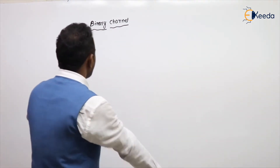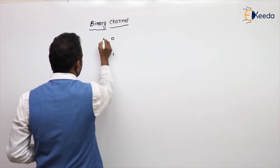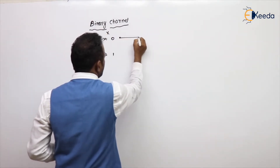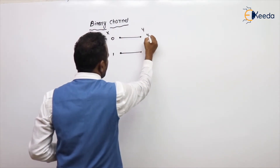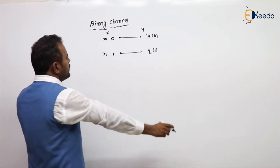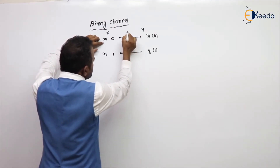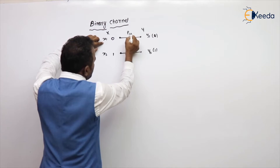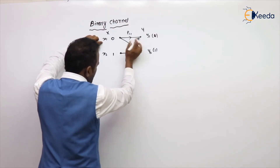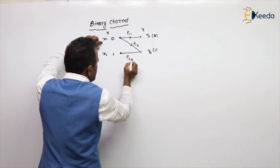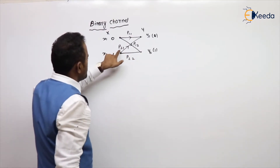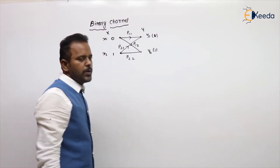For example, consider a binary channel with input symbols 0 and 1 — also called x1 and x2 — on the input side x, and output side y with y1 and y2 (which are 0 and 1). The transition probabilities are P11, P12 (which equals 1 minus P11), P22, and P21. The first notation indicates the input side; the second notation indicates the output side.